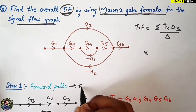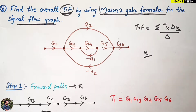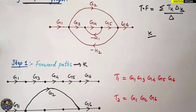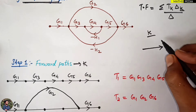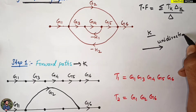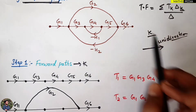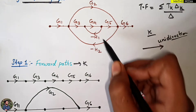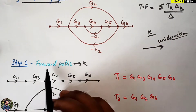K denotes the forward paths. There are totally four steps to understand. Step one: we have the given signal flow graph and we need to find the forward paths. Forward path means we start from a point and go in one direction — unidirectional. You cannot change direction in between. Six nodes are given here, and g1, g2, g3 are gains while h1, h2 are feedback gains.